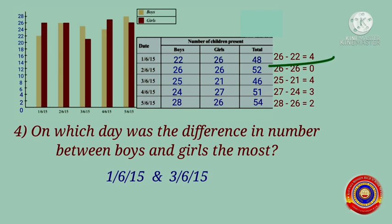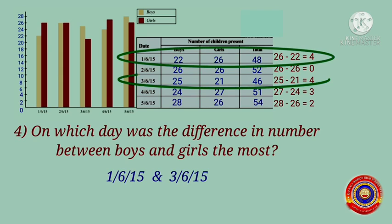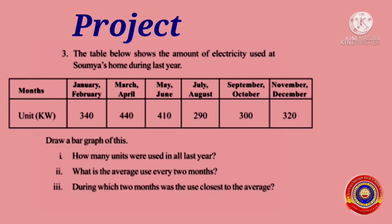On 1st June 2015 and on 3rd June 2015, the difference in the number of boys and girls is the most — the difference is equal to 4. Is it clear for you? Here is a project for you — do this in your project book.